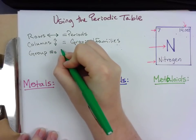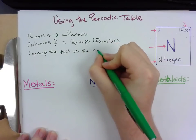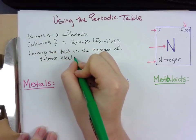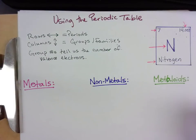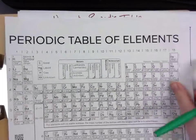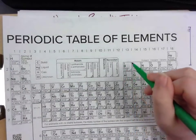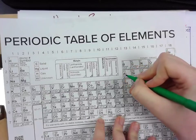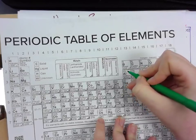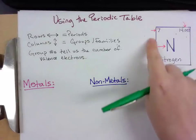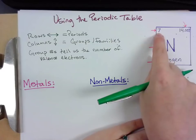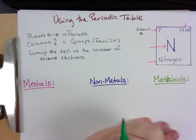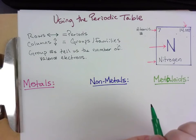Group numbers tell us the number of valence electrons. The other thing you need to know to read the periodic table — looking at just one of these little boxes, every box is a different element. I can see there's a whole number up at the top, a letter or sometimes two letters, and a number with a decimal on it. That whole number in the box is going to be your atomic number. My atomic number is always the whole number in that box, and from last week, your atomic number is the number of protons in your atom.